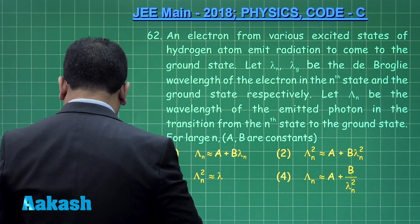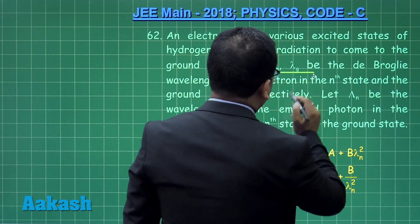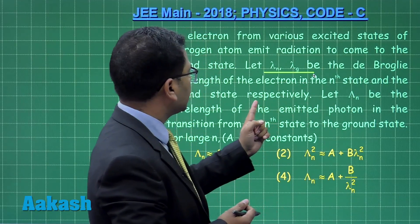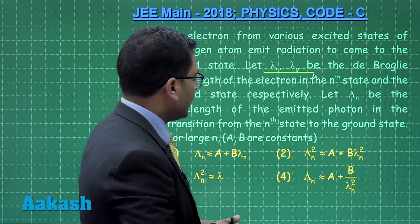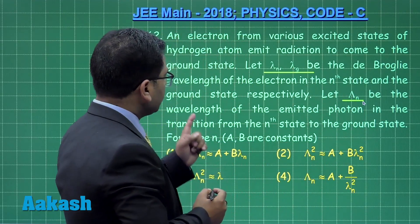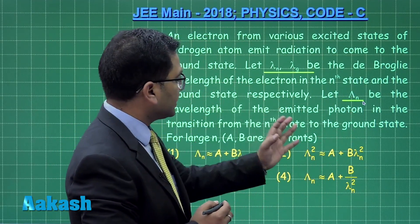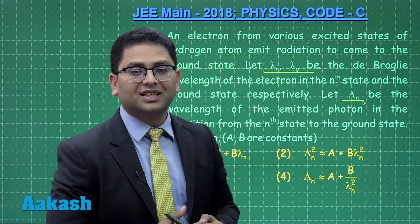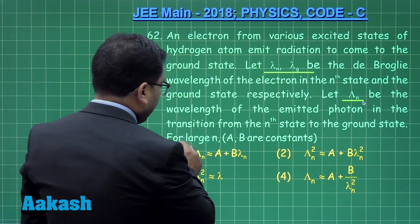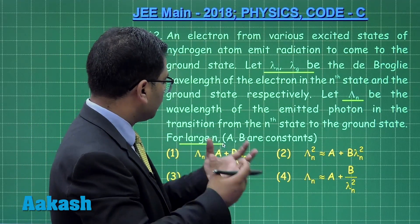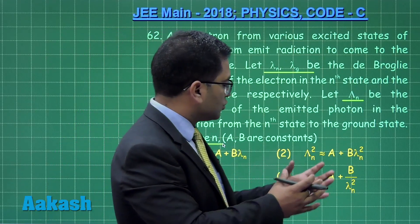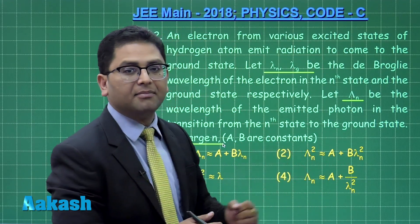Now, λn and λg are the de Broglie wavelengths — these are not the wavelengths of transition. These are the de Broglie wavelengths when the electron is in the nth state and the ground state respectively. λn is small lambda, and capital Λn is the wavelength of the emitted photon in the transition from the nth state to the ground state. It has also been said that n is large, which will be useful for binomial approximation, and a and b are constants.